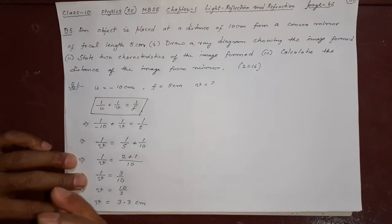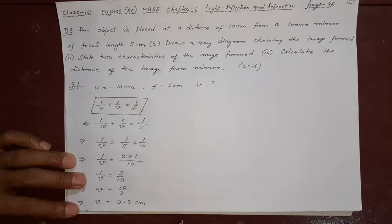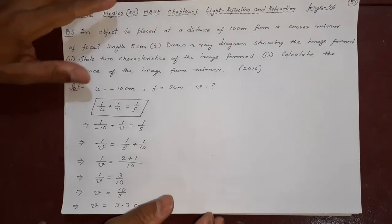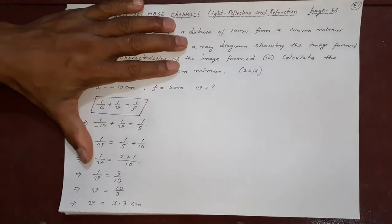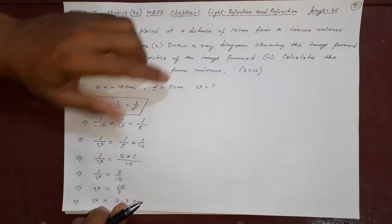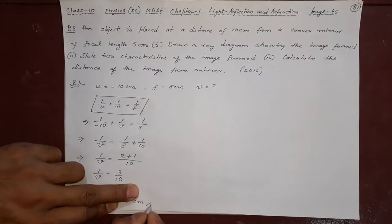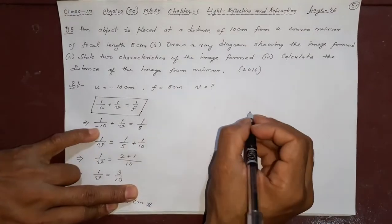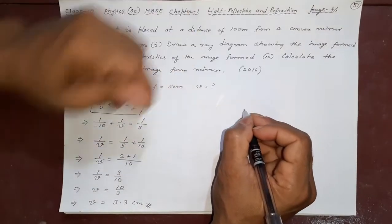Therefore V = 10/3, which is approximately 3.3 cm. Now you see this is coming positive, which means the image will be formed on the right side of the mirror. So we will draw the diagram accordingly. The third part of the question is already answered.